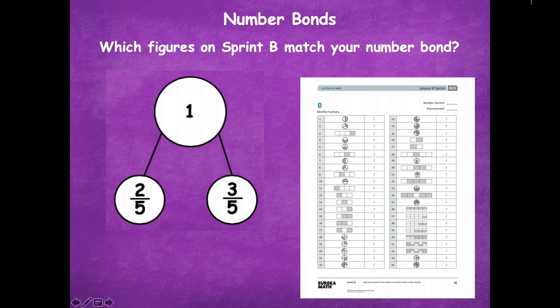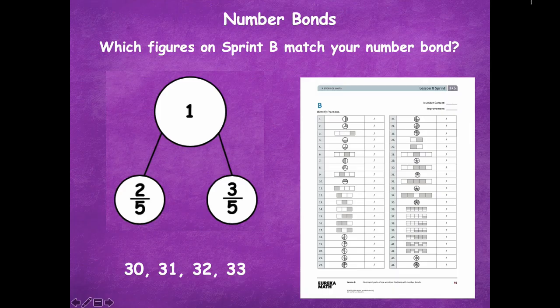Which figures on sprint B match your number bond? Pause the video — you're looking for two-fifths and three-fifths. Click play when ready. Make sure to pause if you need more time. Here's what I came up with: 30, 31, 32, and 33. Did you come up with those too? If not, go take a peek at those to see how they model two-fifths and three-fifths.